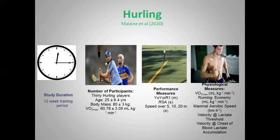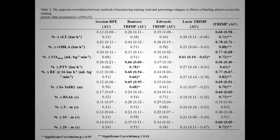Some more data, this time from hurling — the work involving Shane Malone and Kieran Collins over in Ireland. This is probably one of the most comprehensive studies on dose-response ratios, simply because of the number of players involved, the study period, and the number of performance and physiological measures. From the table, it's mainly the iTRIMP method that relates to most of the physiological adaptations. Banister's TRIMP also shows up in some instances, but session RPE shows very little or nothing at all.